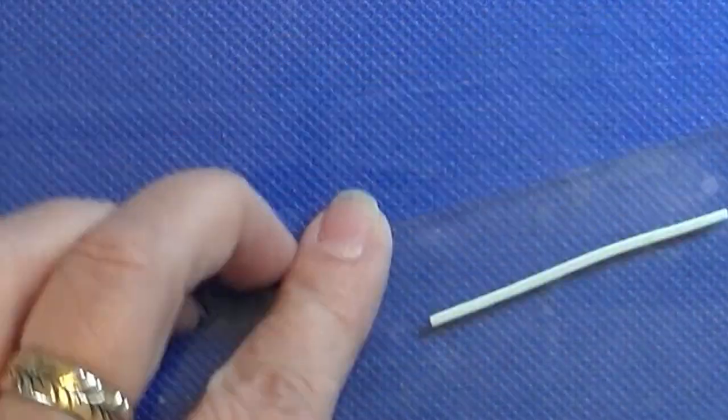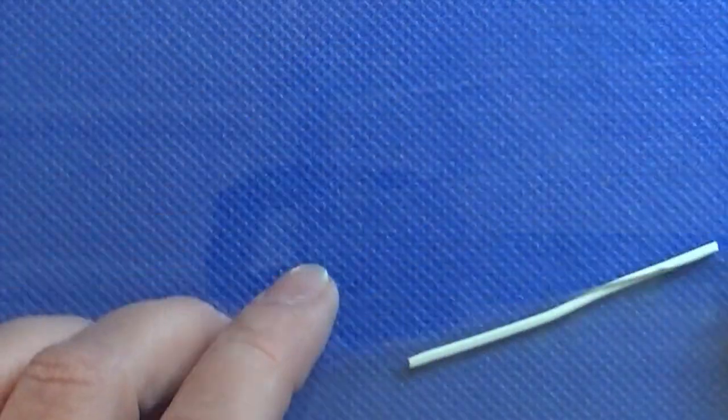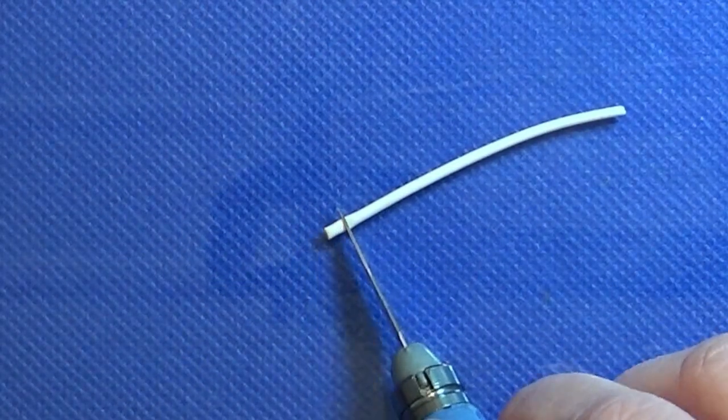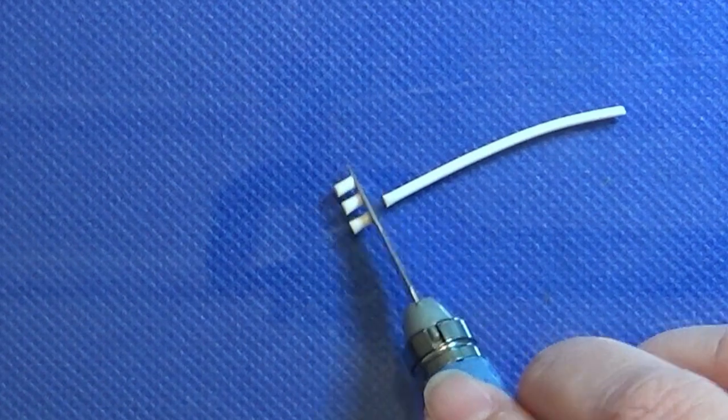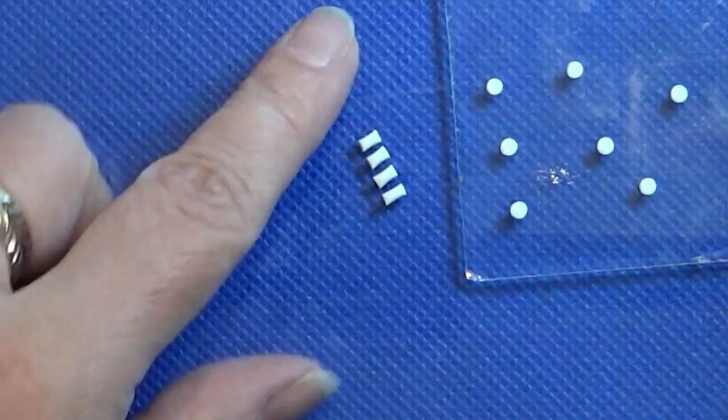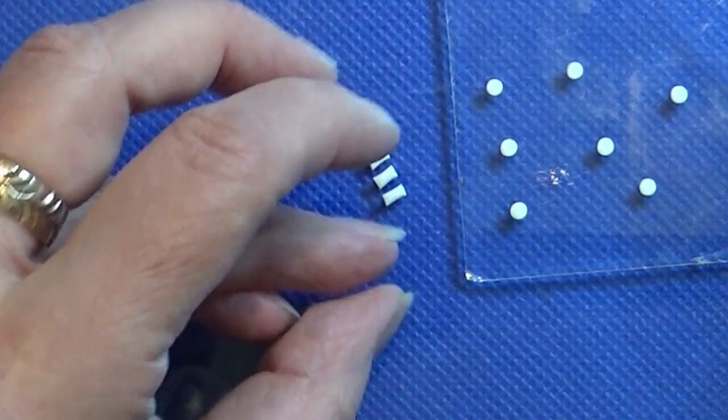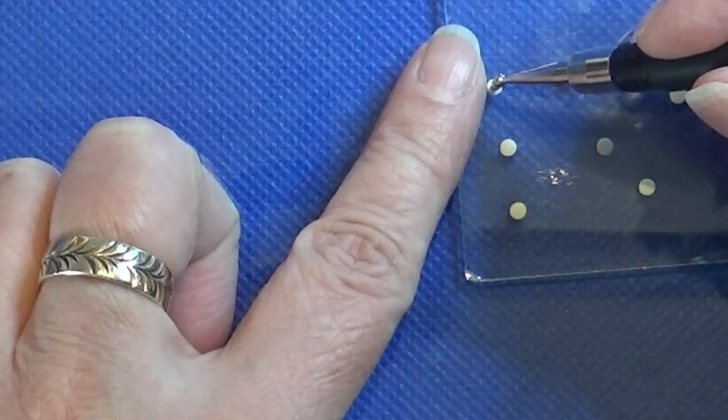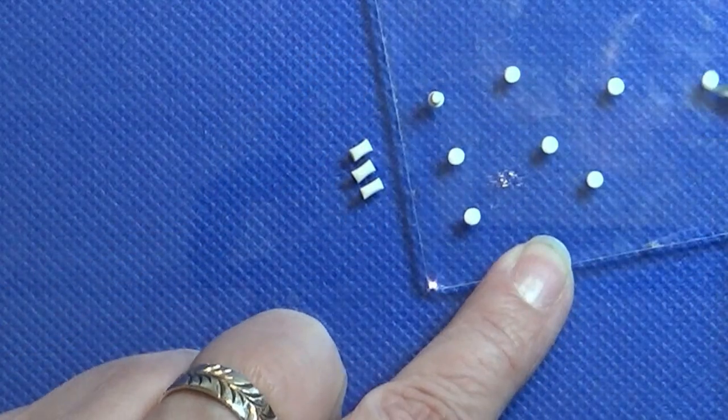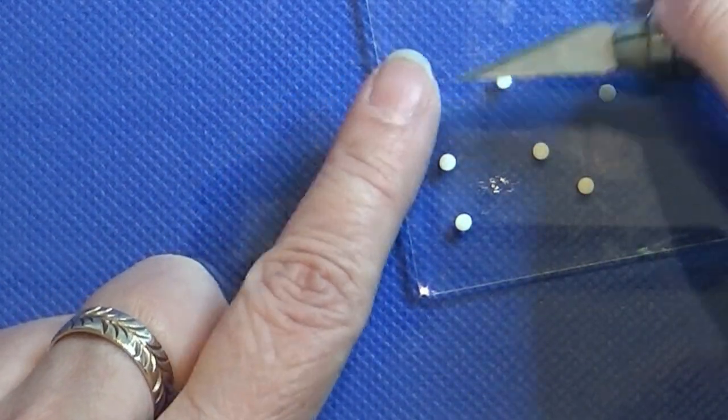Then I'm rolling out a thin strip of white clay and I'm cutting out some tiny pieces of this snake. I place one of these tiny pieces on the circles that we just cut and I'm placing a circle on top of this, and I'm doing that with all that I have here.